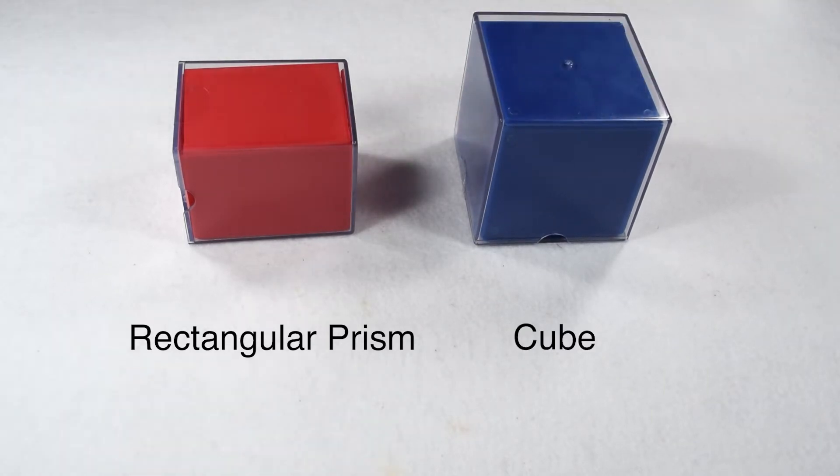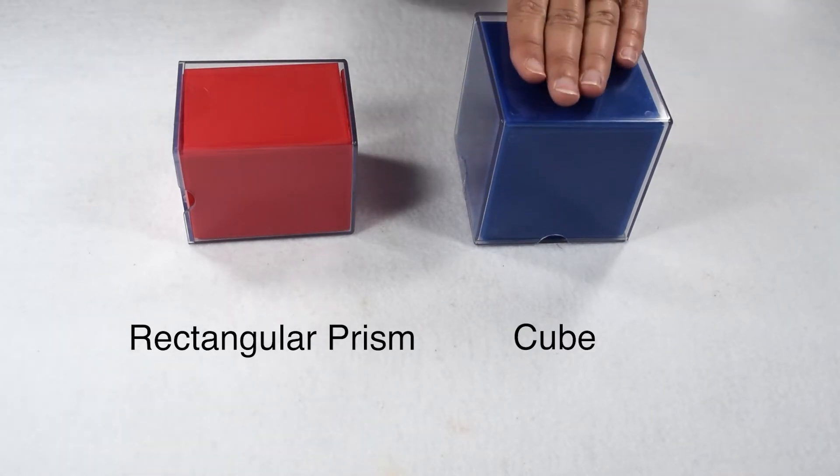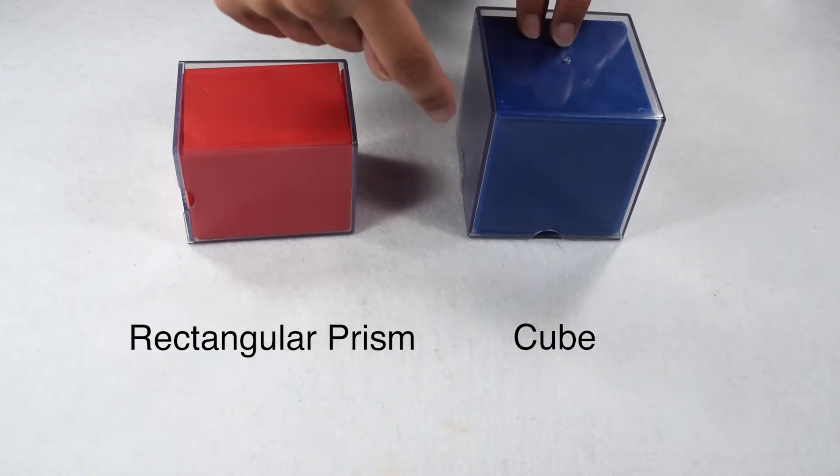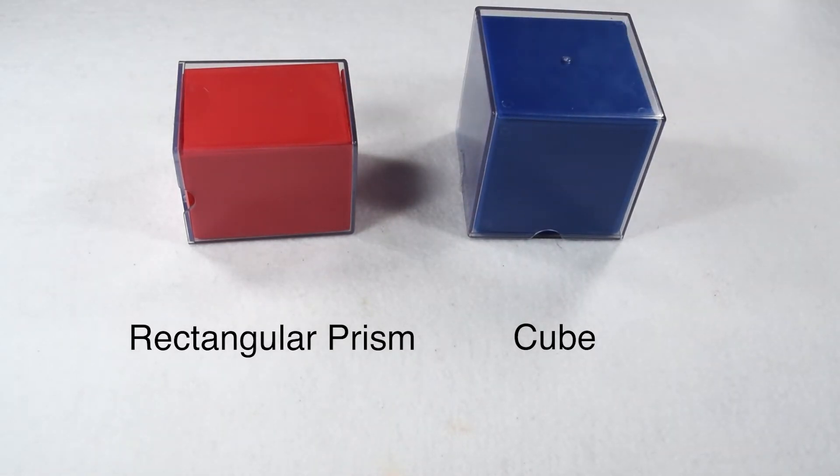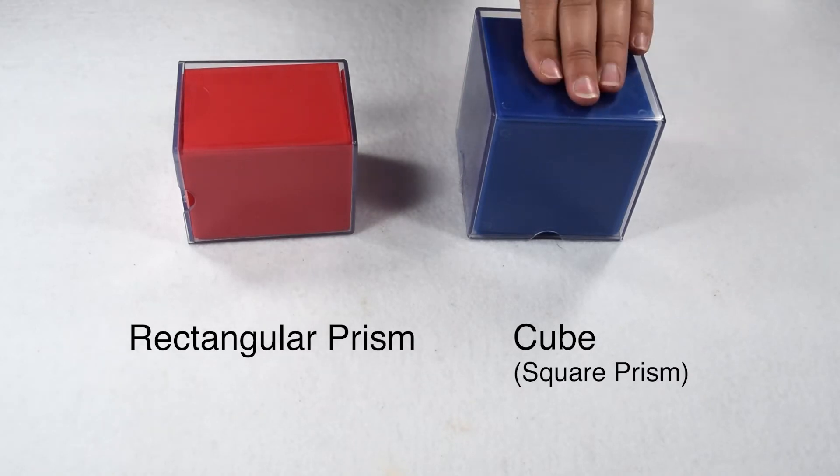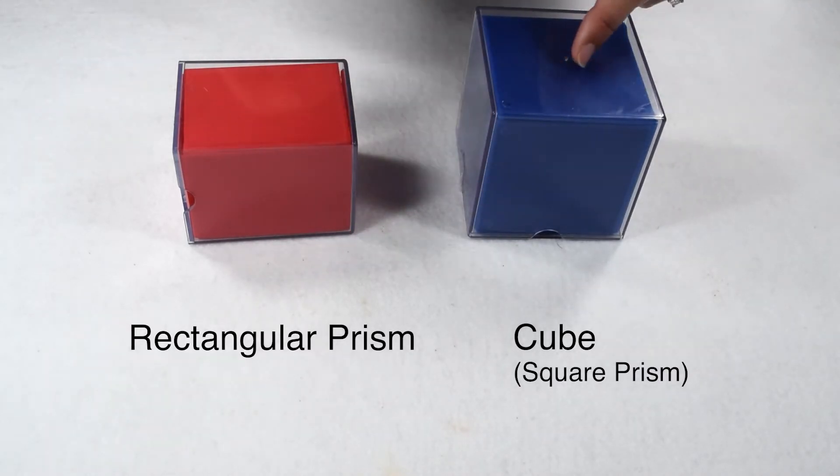Coming back to our cube, it's a unique prism. Not only are the bases made up of squares, but its lateral faces are squares as well. When we call a figure a cube, we know that it means a specific square prism that is made up of six congruent square faces.